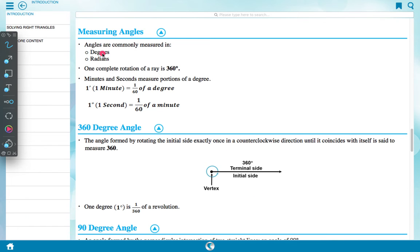Measuring angle. Angle is measured in degrees and radians. One complete rotation of a ray is 360 degrees. Minute and second measure proportion of a degree. One minute is equal to 1 upon 60 of a degree. One second is equal to 1 upon 60 of a minute. 360 degree angle: angle formed by rotating initial side exactly once in a counterclockwise direction until it coincides with itself is said to measure 360 degrees. Here initial line is rotating and again joining same initial line is 360 degrees. One degree is equal to 1 upon 360 of a revolution.